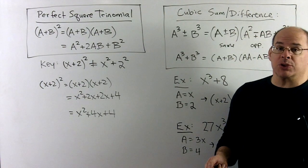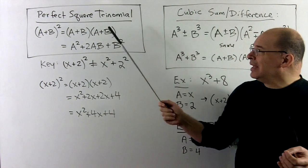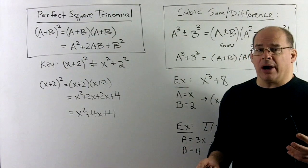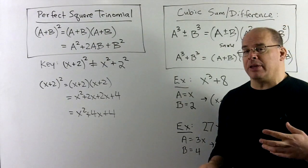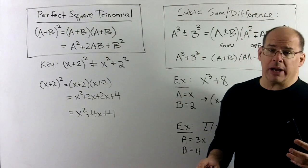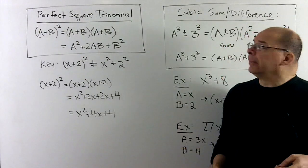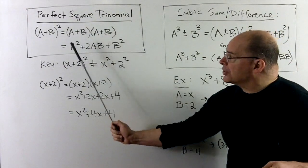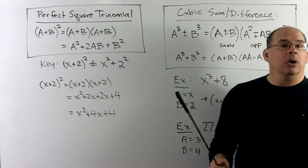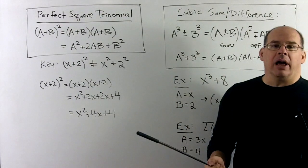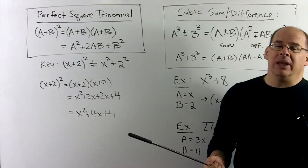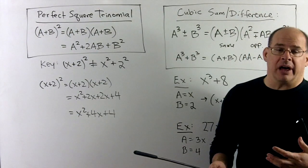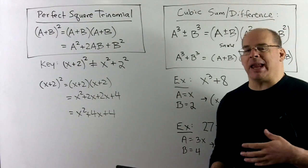For our next special case, we have the perfect square trinomial. This case is not nearly as important as difference of two squares or the cubic formula, though it does come up with completing the square. It's called a trinomial because it has three parts. Really, in one direction it's just FOIL; in the other direction, if it's going to factor, it works by the factoring methods we've already done — so as a special case, not that special.